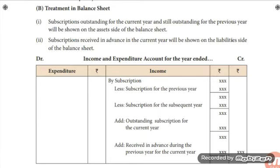To summarize: add subscription received, less subscription for the previous year, less subscription for the subsequent year — these are not related to the current year, so we deduct them. We must take only the current year transactions. Then add outstanding subscription for the current year, and add subscription received in advance during the previous year for the current year, since any current year amount paid in a previous year should be added back.